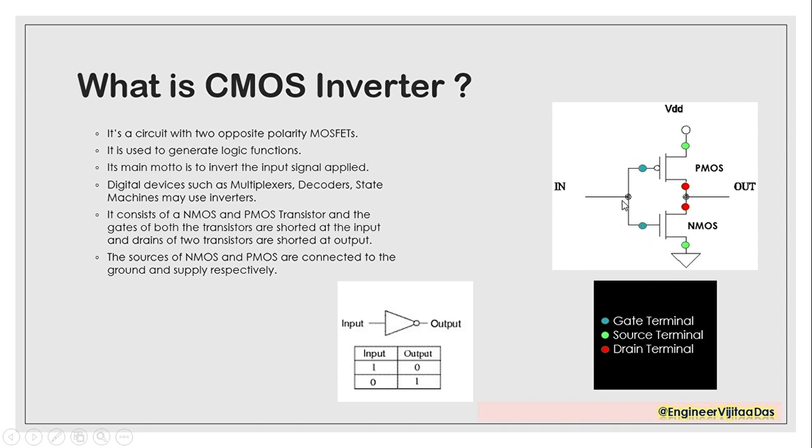PMOS is connected to VDD and NMOS is connected to ground. So this is the basic schematic diagram of CMOS inverter. We should understand that the main functionality of this CMOS inverter is to invert the input signal applied on it.